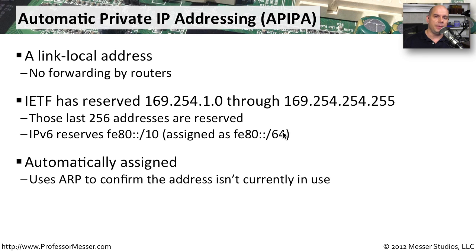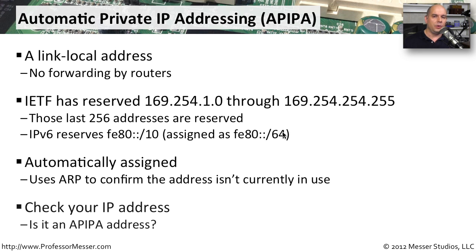These addresses are automatically assigned by your operating system once it realizes no DHCP server is responding. It picks an IP address to assign to the network, but before it does, it sends an ARP out to your local subnet to see if anybody responds. If they do, that address is in use and it moves to the next one. It sends another ARP and waits for a response — and if it finally gets no response, that is the IP address used for the link local address.